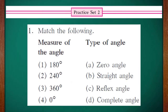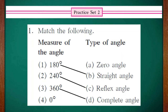Now let's begin with practice set 2. The first question is match the following. On the left hand side we can see the measures of the angle, and on the right hand side we have the names or types of angles. 180 degrees is a straight angle — it makes a straight line. 240 degrees is a reflex angle, as reflex angle measures more than 180 and less than 360. 360 degrees is a complete angle — a full completed circle. And zero degree is a zero angle.